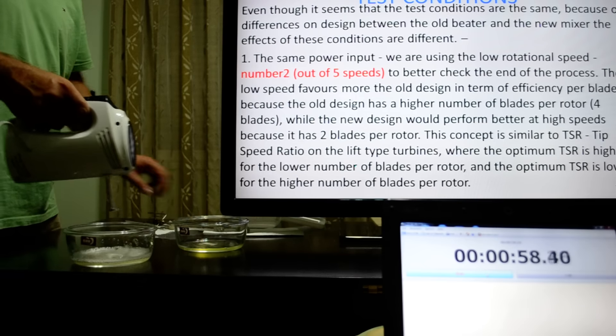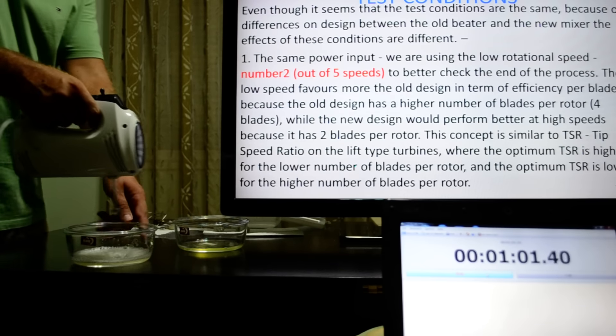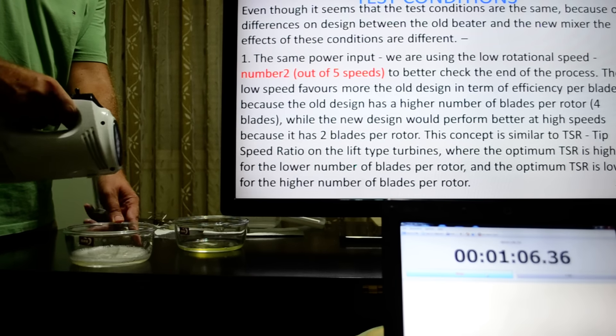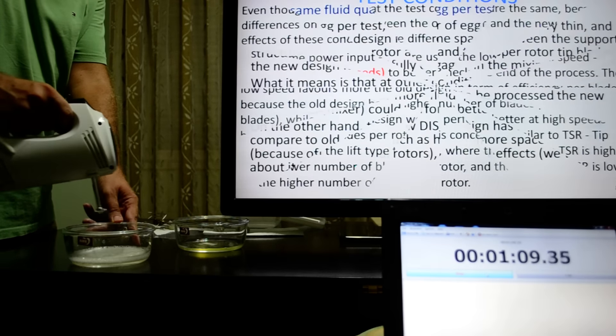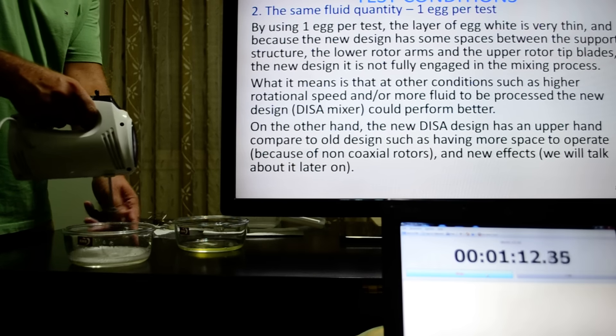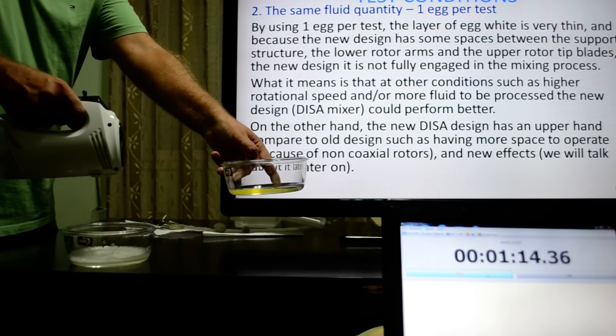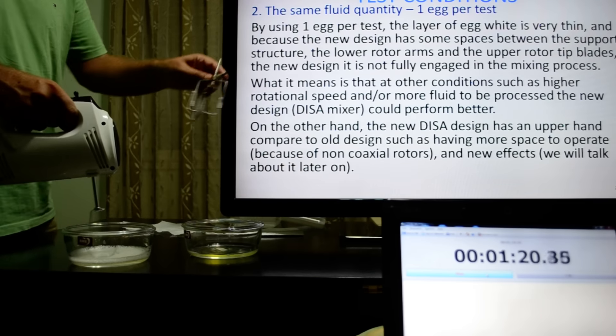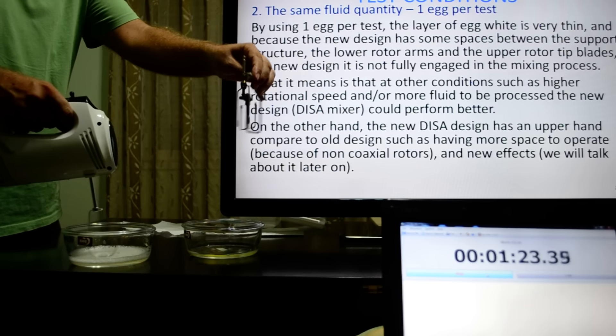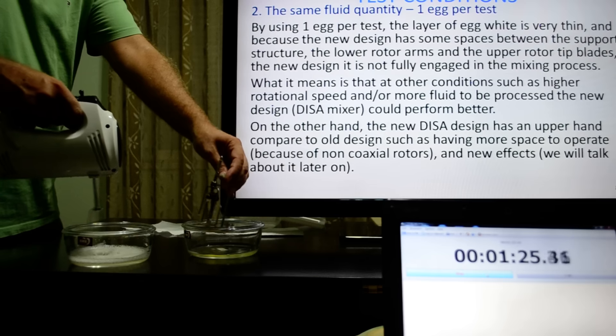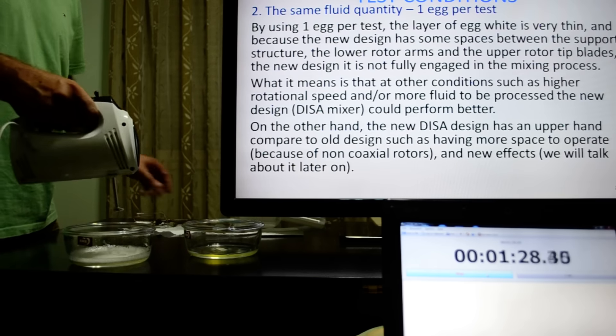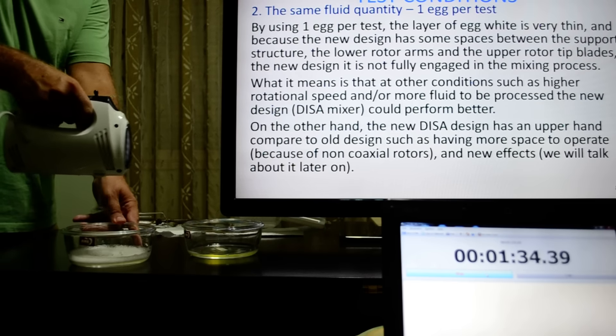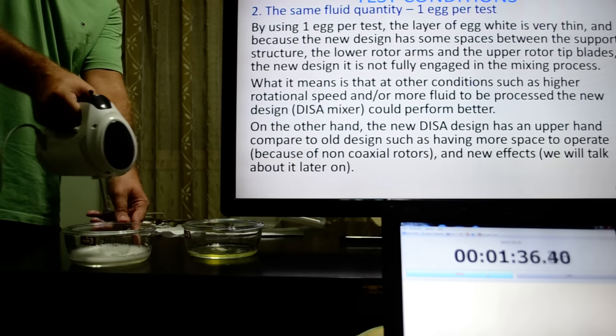This concept is similar to TSR, which is tip speed ratio on the lift type device, where the optimum TSR is higher for the lower number of blades per rotor and the optimum TSR is lower for the higher number of blades per rotor. The same fluid quantity, one egg per test. By using one egg per test, the layer of egg white is very thin, and because the new design has more space between the support structure, the lower rotor arms and the upper rotor tip blades, the new design is not fully engaged in the mixing process. What this means is that at other conditions such as higher rotation speed and or more fluid to be processed, the new design could perform better.